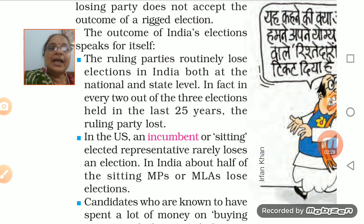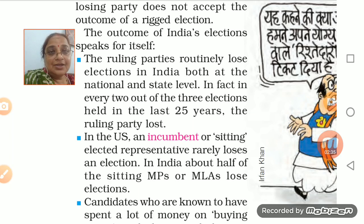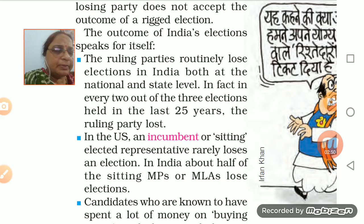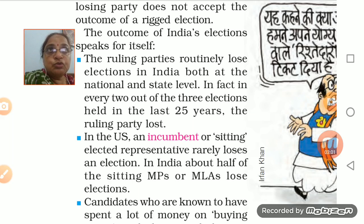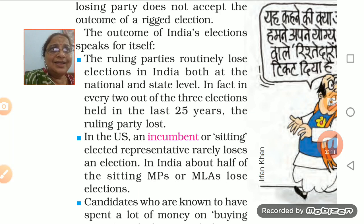After 2014 the trend has changed — one party came and in 2019 elections after five years the same party came back. Before 2014, whichever party was forming the government usually formed a coalition government, where 3-4 parties join together to form government. If these 3-4 parties were losing, it showed that people's trust had reduced somewhat.